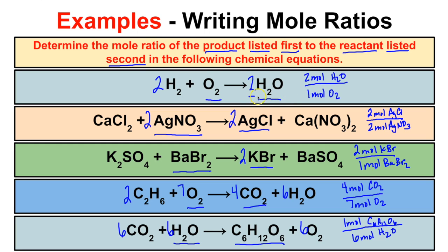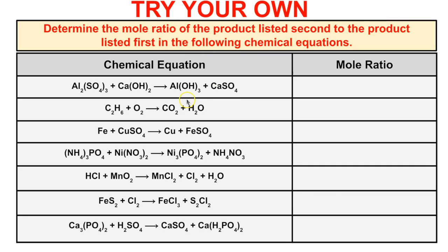A mole ratio is a comparison of two substances in a chemical reaction or equation. Make sure you're looking at what is being asked — what you're trying to find compared to what is known. Now let's take a look at some problems you can try on your own. Pause the video — determine the mole ratio of the product listed second to the product listed first in the following chemical equations. Balance the equation first, then develop your mole ratio. Here are the answers: here is the balanced chemical equation and the mole ratios of the product listed second to the product listed first.